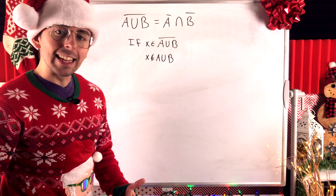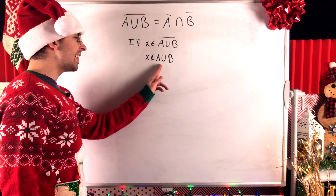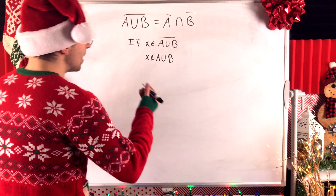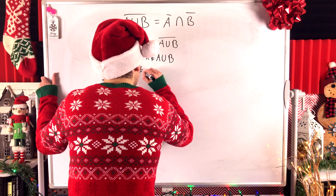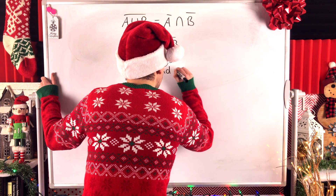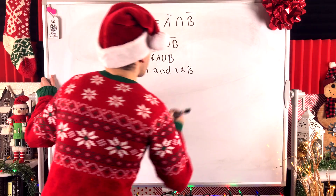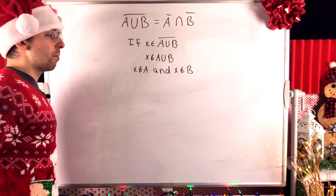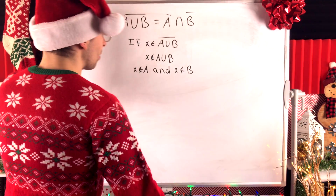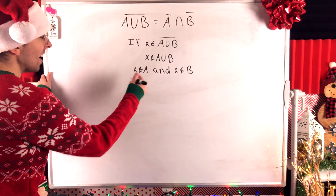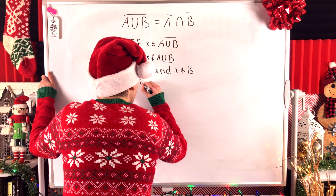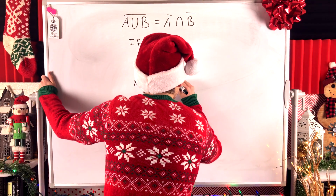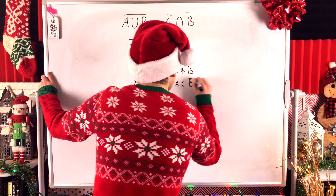To be in A union B, x just needs to be in A, or B, or both. So if x is not in A union B, that means x is not an element of A and x is not an element of B — because if it were an element of either one, then it would be in the union. It isn't, so it's not in A and it's not in B. Then by definition of set complement, if x isn't in A, that means x is in A complement. Similarly, x isn't an element of B, so x is an element of B complement.